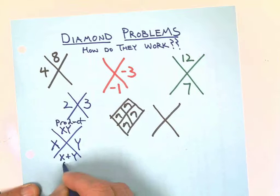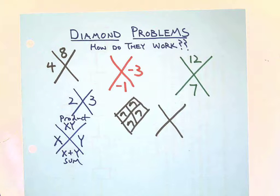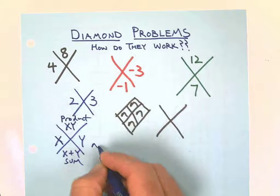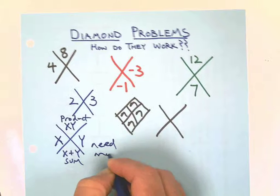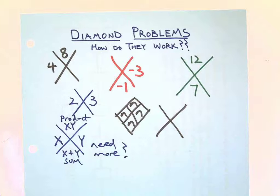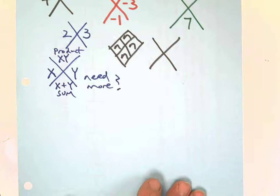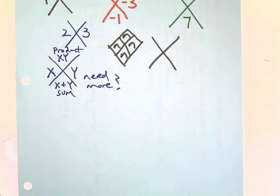There, you learned what you needed to learn in less than two minutes. Up here, it's called the product. Down there, that's called the sum. Okay, now if that doesn't quite get it done for you, you need more, you need more explanation.